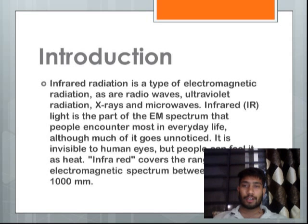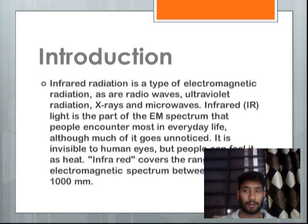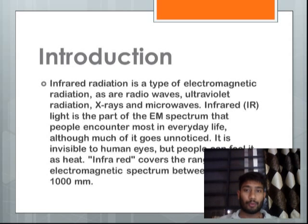Infrared radiation is a type of electromagnetic radiation, such as radio waves, ultraviolet rays, X-rays, and microwave. Infrared is the part of the electromagnetic spectrum that people encounter most in everyday life, although much of it goes unnoticed as it is not seen by the naked eye.